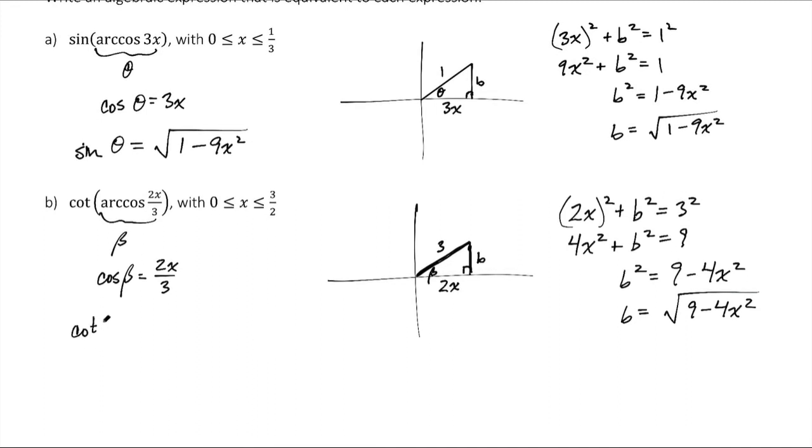All right, and then we are doing cotangent of that angle. And cotangent of an angle is adjacent over opposite. And so here I say, well, adjacent is 2x. And opposite is b, which is that thing there, the square root of 9 minus 4x squared.